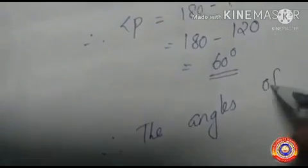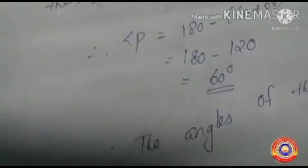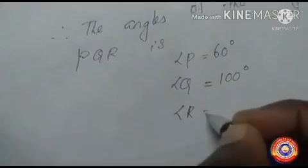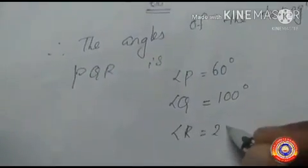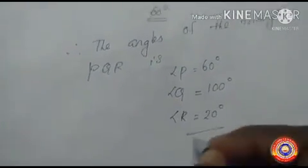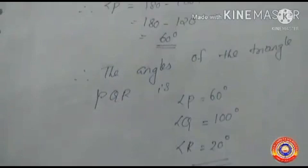Therefore, all three angles of triangle PQR are: angle P equal to 60 degrees, angle Q equal to 100 degrees, and angle R equal to 20 degrees.